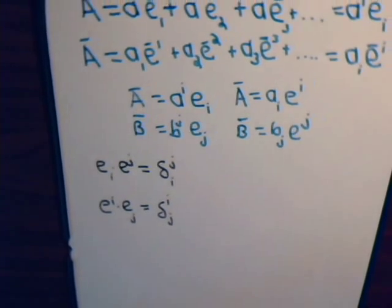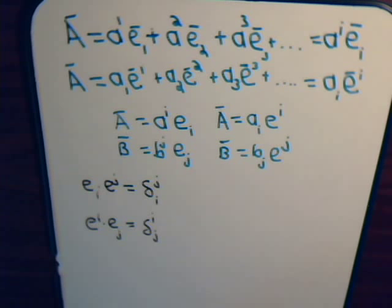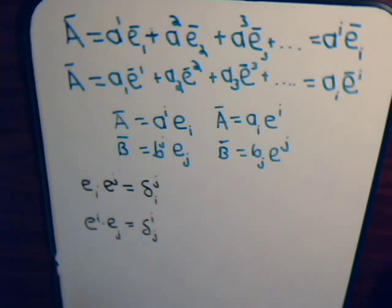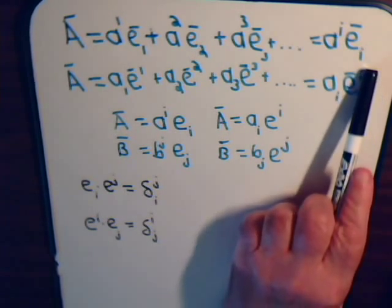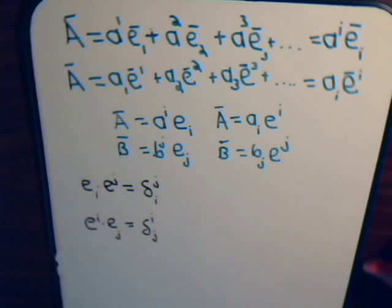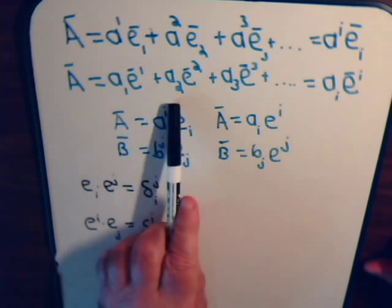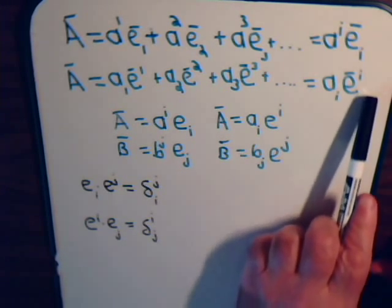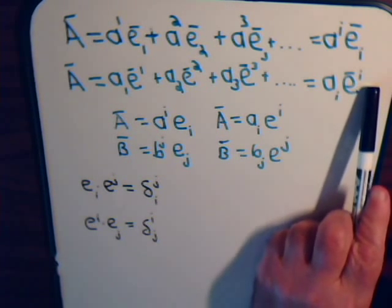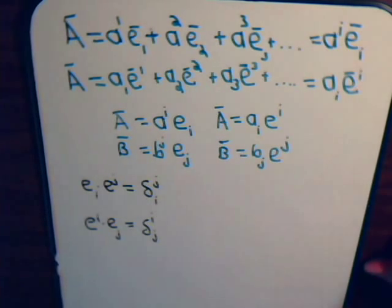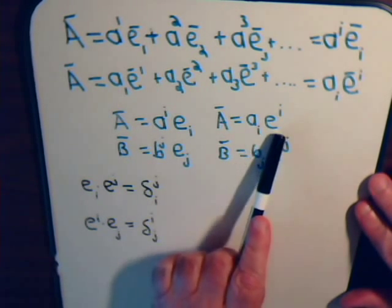To get us started, let's consider a general vector A. We can express that vector in terms of its contravariant components, which we can write very succinctly, or that same vector can be expressed in terms of its covariant components — also expressed more succinctly. We have a repeated index, upper and lower, in each case, which as we explained in video number one, means that we're summing over that index. So vector A could be expressed either way.